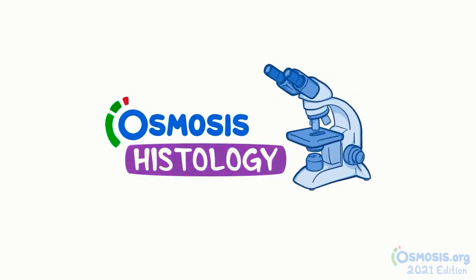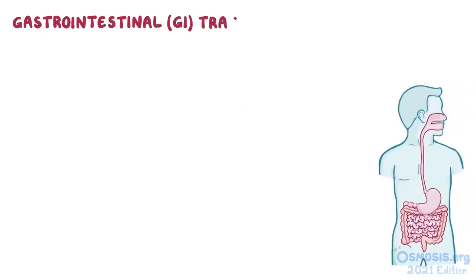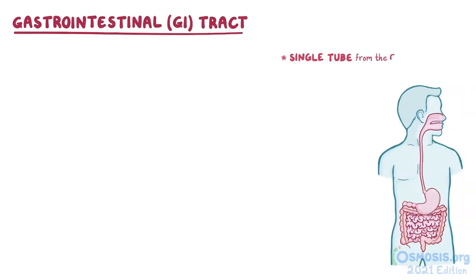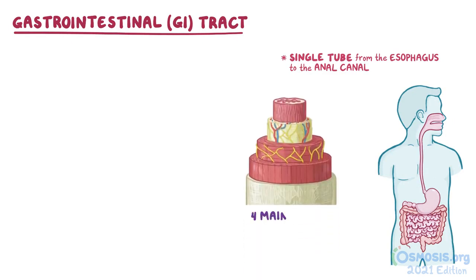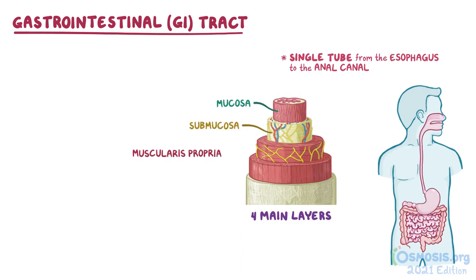Let's get a closer look. The gastrointestinal or GI tract extends as a single tube from the esophagus all the way to the distal portion of the anal canal. Although different parts of the tract may appear to have very different structures and functions, the wall still maintains four main layers all throughout the GI tract: the mucosa, submucosa, muscularis propria, and either an outer serosa or adventitia.